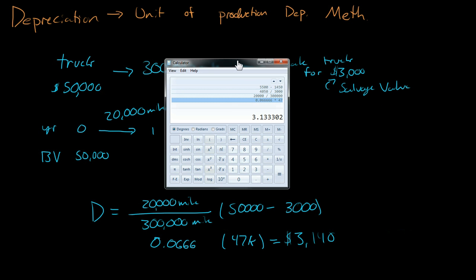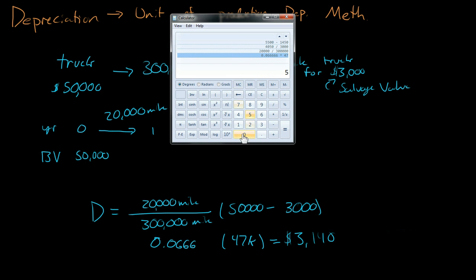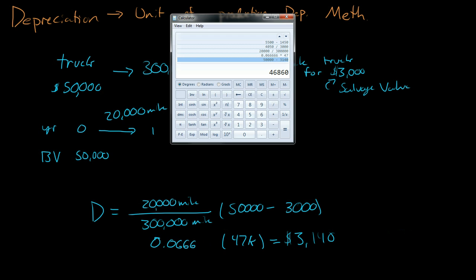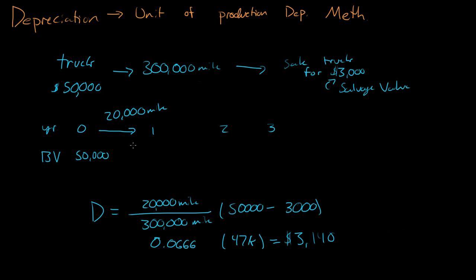So let's look at that real quick. So 50,000 minus $3,140 will equal $46,860. So that's the book value in the first year.